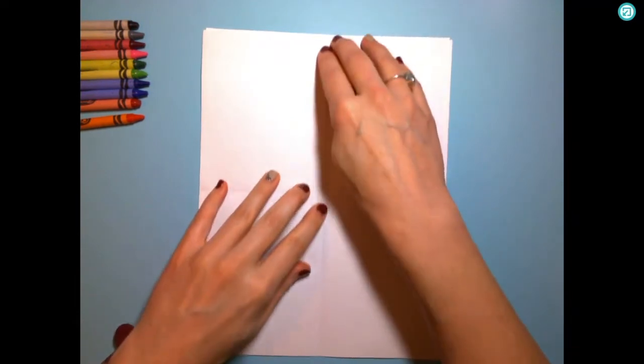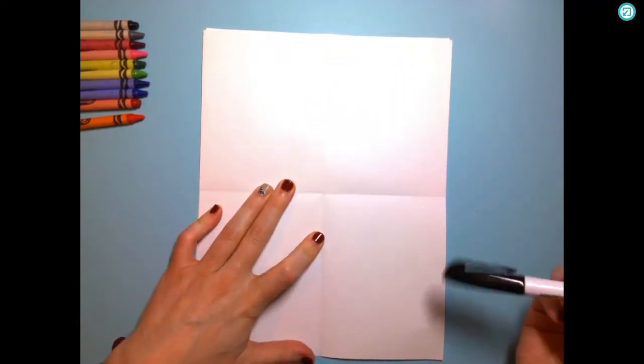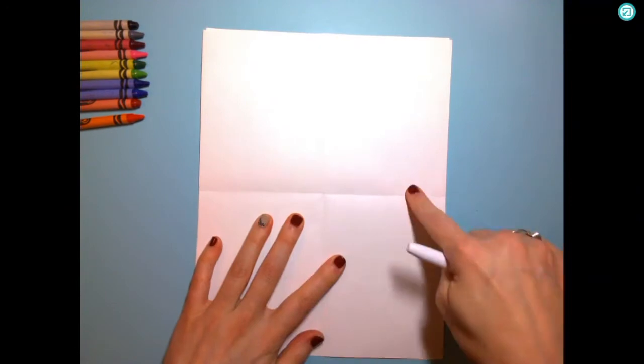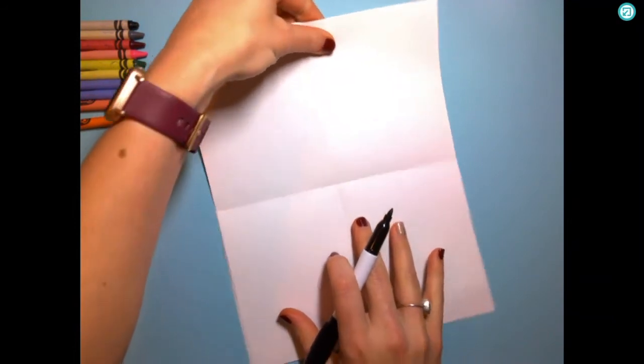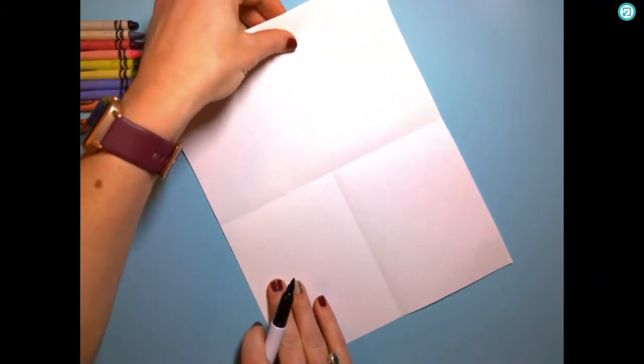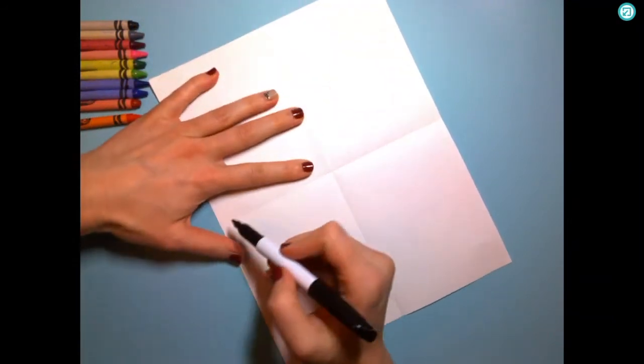I recommend you take a second sheet of paper and place it underneath since we're using Sharpie. If you're not using Sharpie, you won't be worried about that. But Sharpie can bleed through and we don't want to get it on our table. The first thing we're going to do is trace our lines to create our boxes. And whenever you're drawing, if you need to turn your paper as you draw, sometimes it's easier to get to what you need.